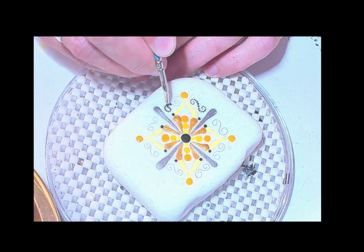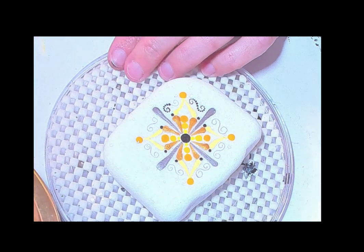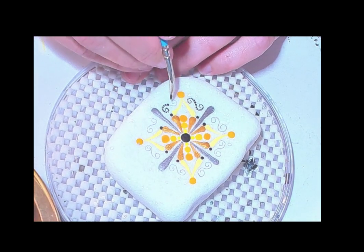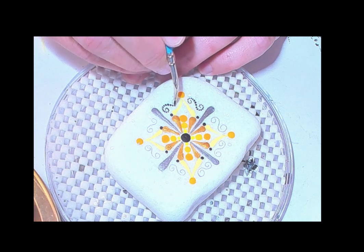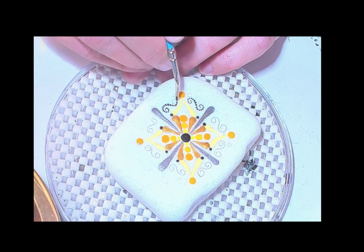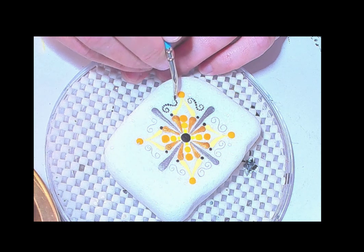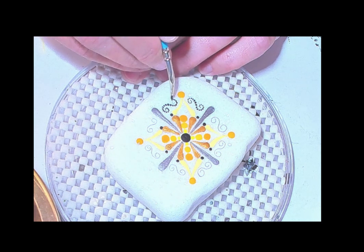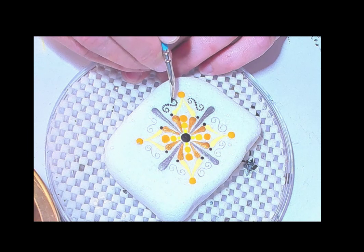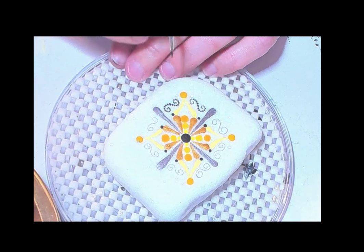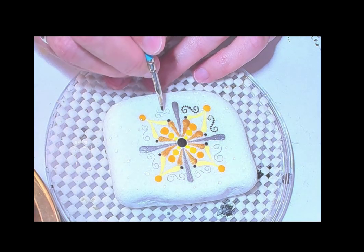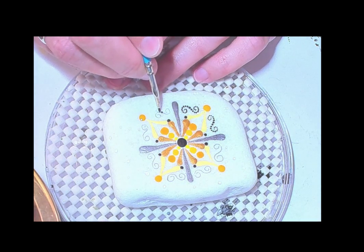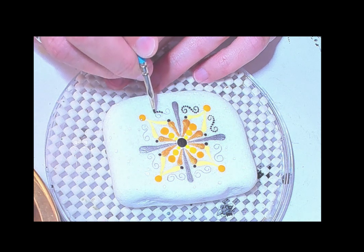And by all means, if you have the dotting tools, go for it with this. Just start in the middle of that S and work your way out. And as you work your tool around, the dots will get smaller because the paint is coming off the tool. So don't think just because you have dotting tools you can't do this design. You can. You can do it! You guys are awesome!